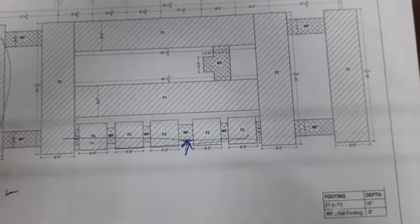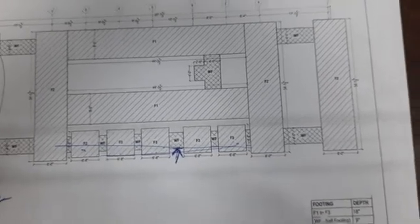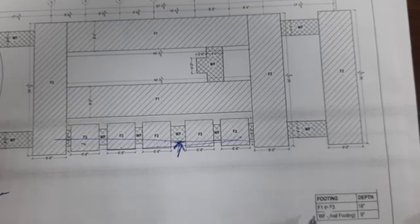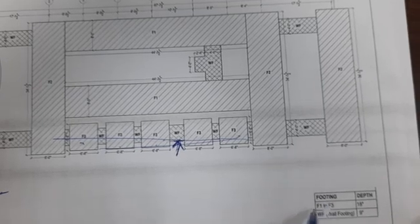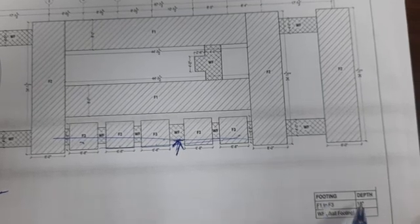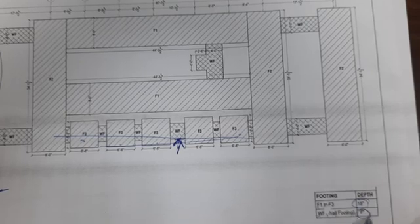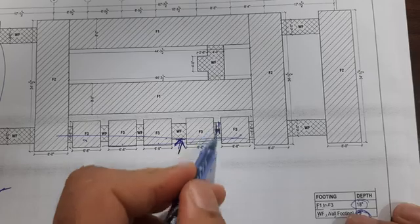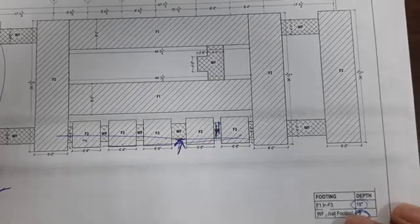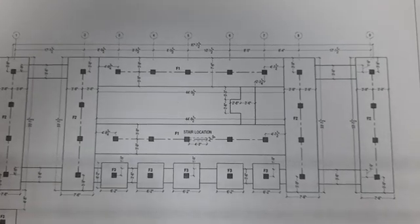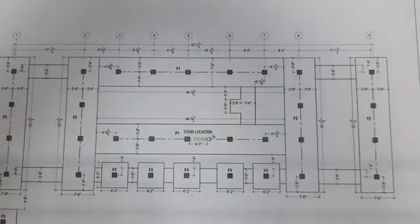Let me focus the camera to show the footing details. Footing 1 and Footing 3 have a depth of 18 inches. The strip connecting them has a depth of 9 inches. Now let me show you the column positioning inside this footing.